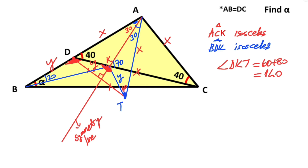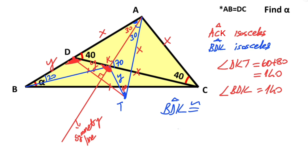So angle DKT must equal 140 degrees. Notice that angle BDK is also 140 degrees. Therefore, if you focus on triangles BDK and DKT, these are congruent triangles, because these two triangles have the same angles and the same side. That means the length of BK must equal the length of DT.